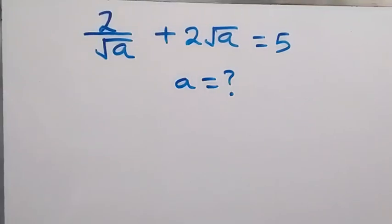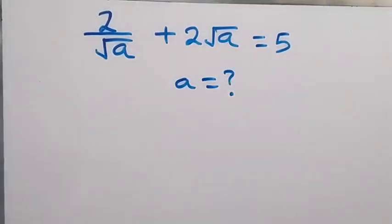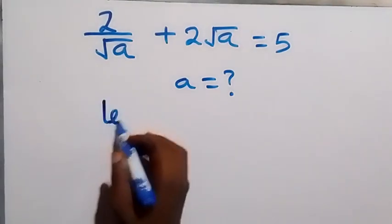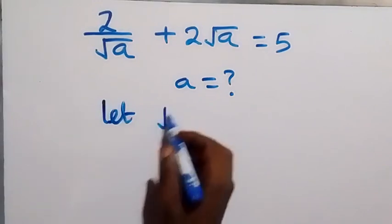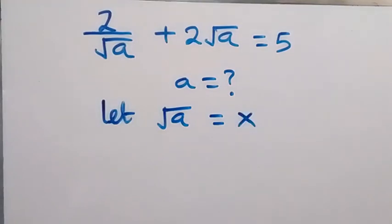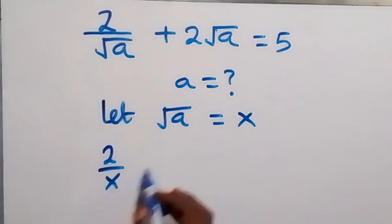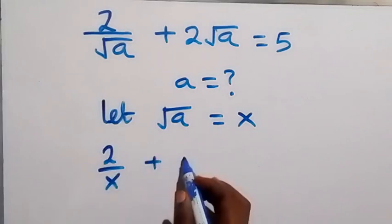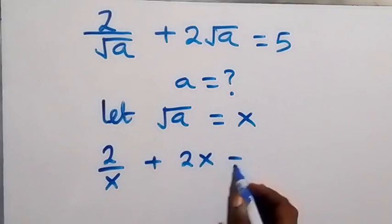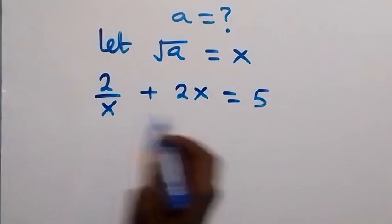Hello, you are welcome. We will solve this algebra problem: 2 over root a plus 2 root a equals 5. To find the value of a, we let root a be equal to x, to make our work easier. From here we can write this as 2 over x plus 2 times x equals 5.